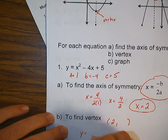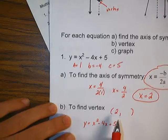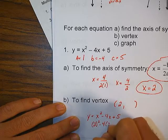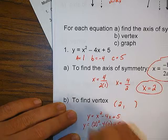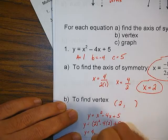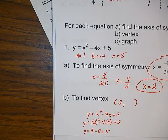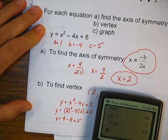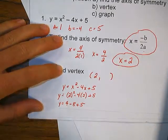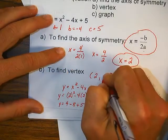Take the equation and substitute 2 in for x. So y equals 2 squared — 2 times 2 is 4 — minus 4 times 2, so minus 8, plus 5. I'll take out my calculator: 4 minus 8 plus 5. So my y equals 1. Wait — so the coordinates for my vertex are at 2, 4. I'd be able to put that on the graph if I wanted to.